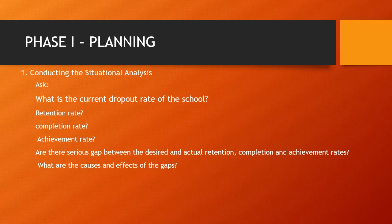Let's talk about phase one: planning. Under planning, we have conducting the situational analysis. We ask ourselves: What is the current dropout rate of the school? What is the retention rate? How about the completion rate? The achievement rate? Are there serious gaps between the desired and actual retention, completion, and achievement rates? And what are the causes and effects of those gaps?